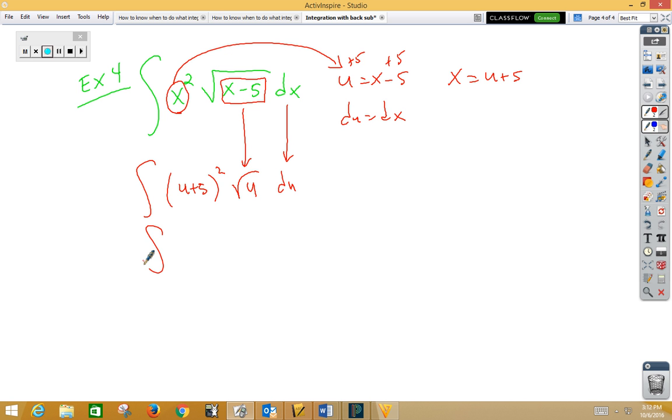Well, the only thing that changes is our algebra. We're now going to need to FOIL this term. So if we FOIL that, we get u squared plus 10u plus 25. Let's think of the root u as u to the 1 half power du. Let's distribute that.